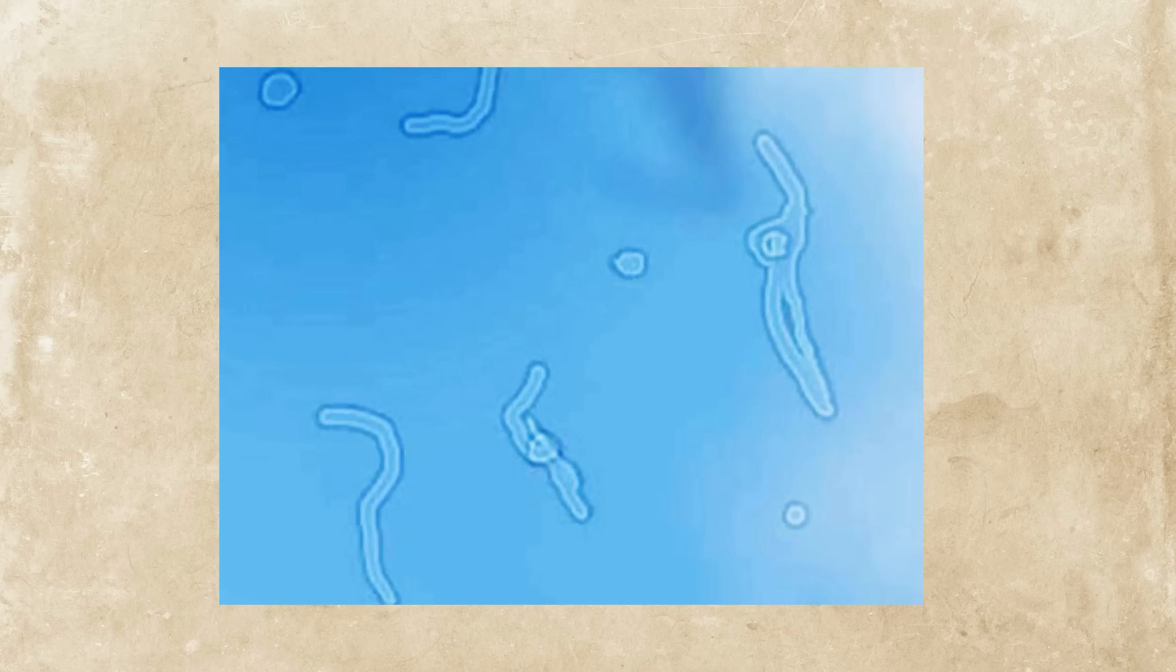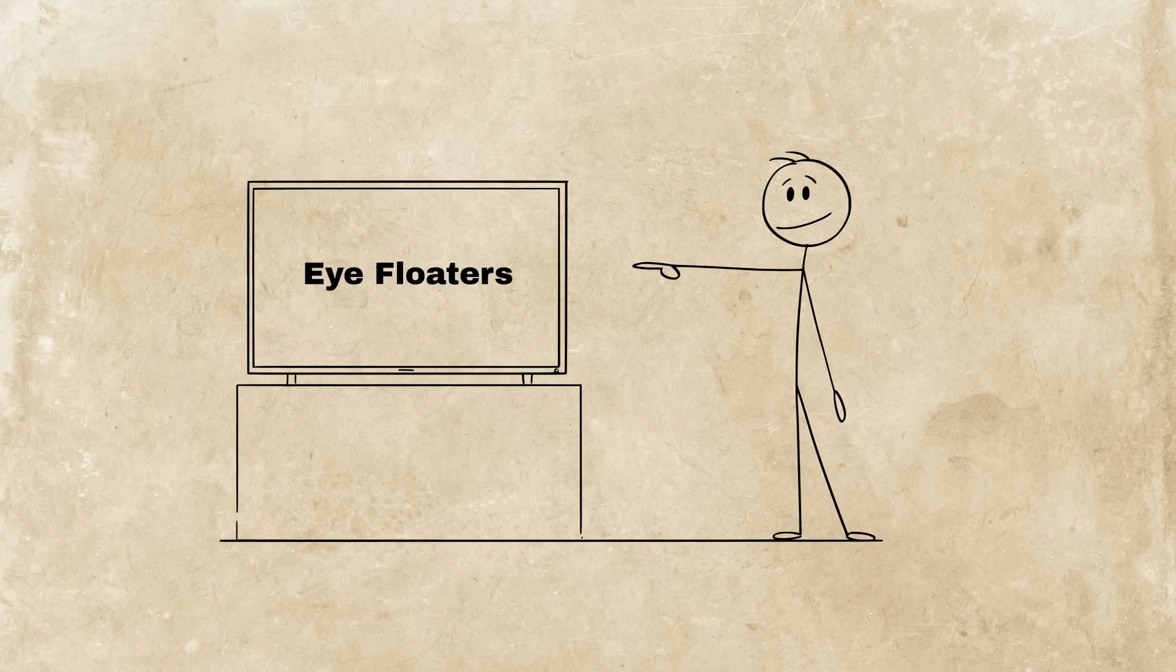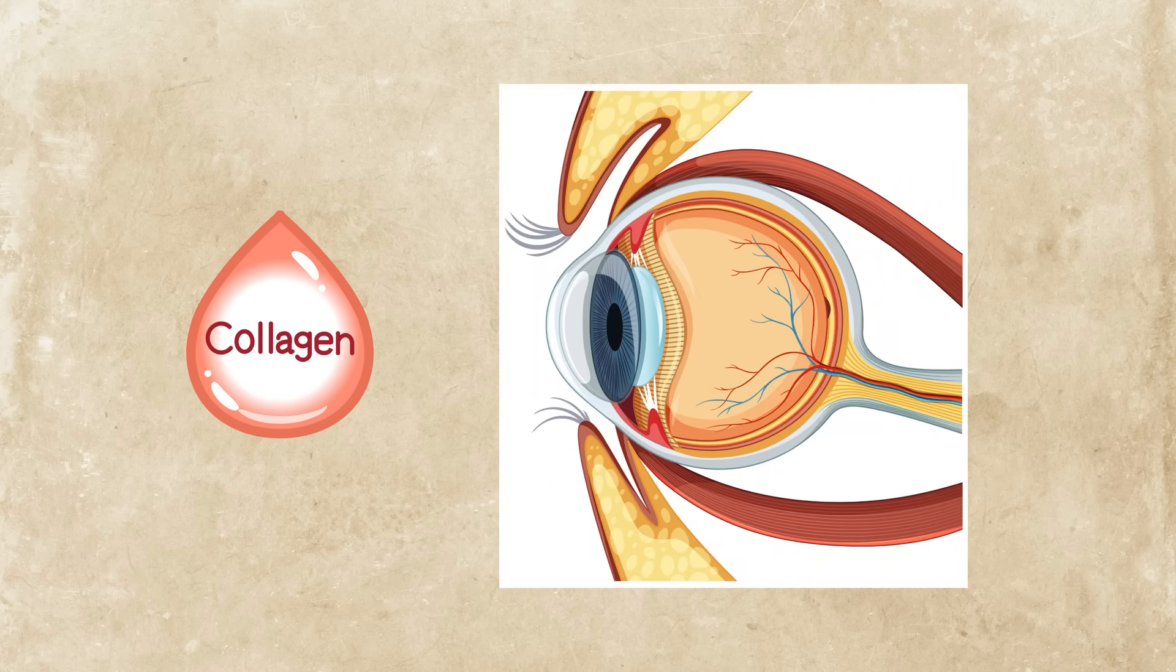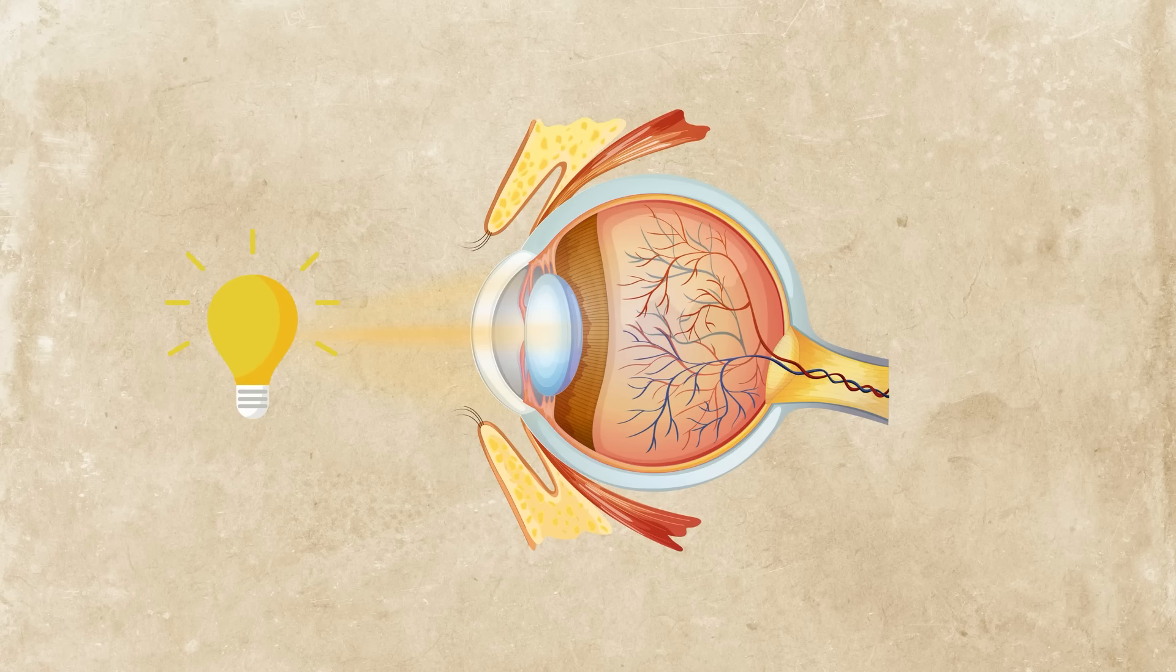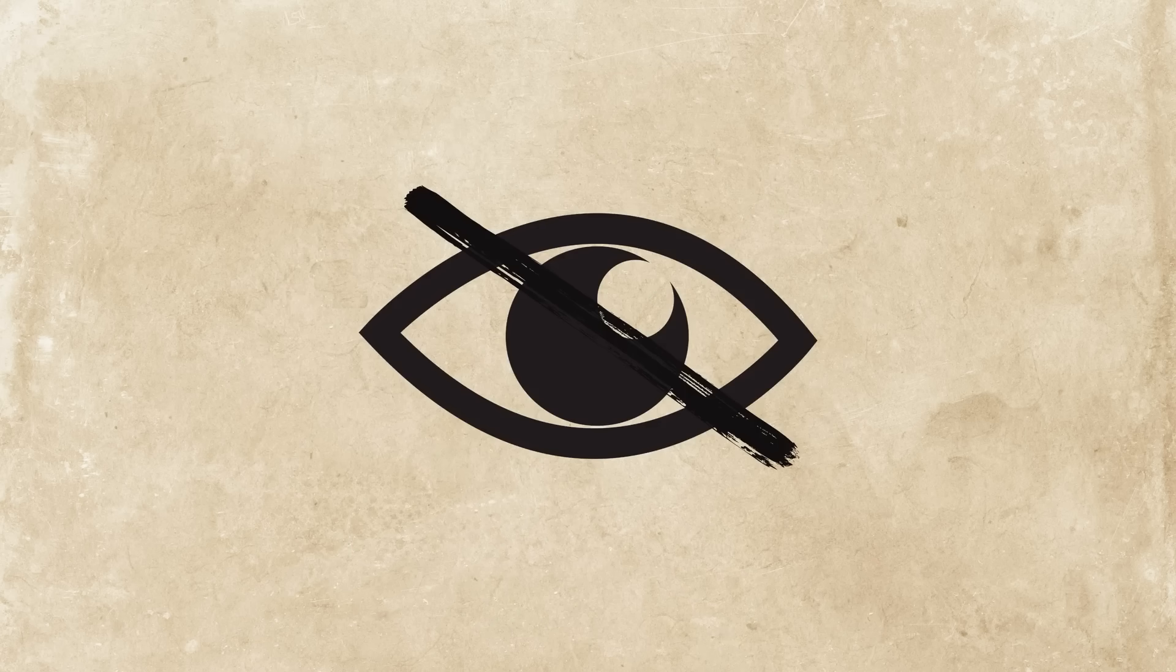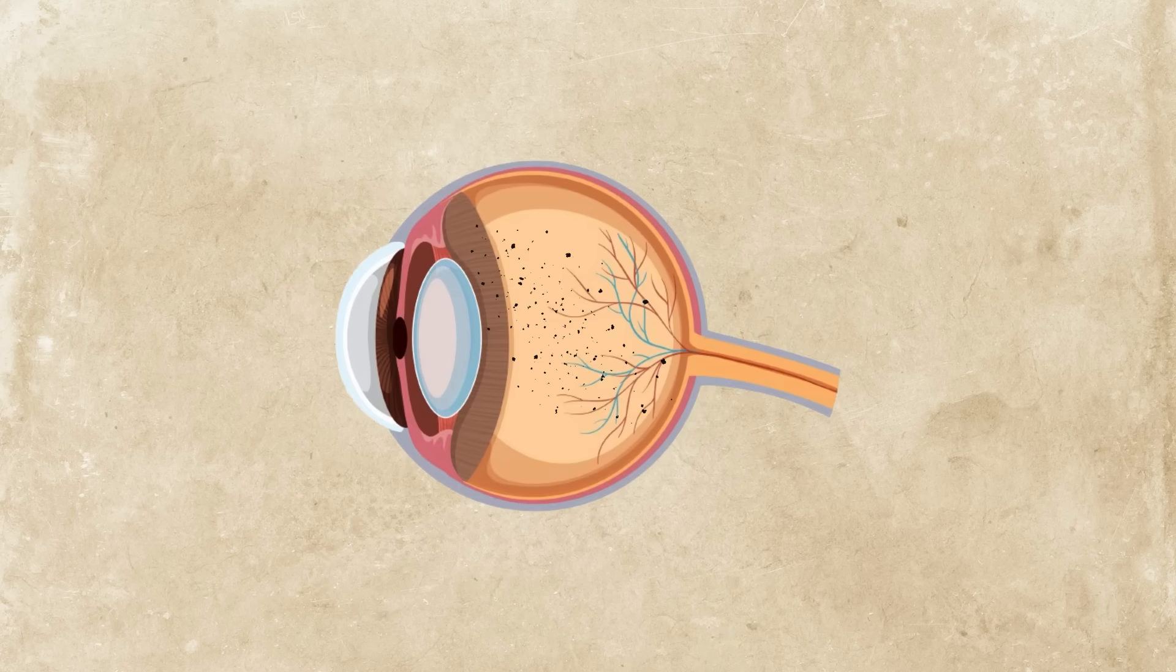Eye floaters. Ever spot little squiggles drifting across your vision, especially when looking at a bright sky? Those are eye floaters, tiny bits of collagen or debris floating in the vitreous humor of your eye. As light passes through, these cast shadows on your retina. They're harmless, but because they move with your eyes and never sit still, they feel like glitches in your field of vision. Your eye isn't broken, just a little dusty on the inside.